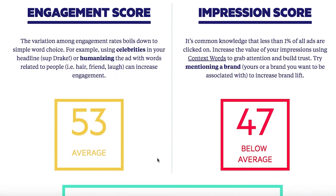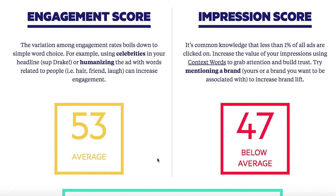We can also see some suggestions for each of these scores to up our game. For instance, on the engagement score, they recommend using humanizing language or even celebrities in your headline — if you can use Drake in your headline and have it make sense, please do that and email it to us. On the impression side, they talk about context words as well as mentioning a brand such as yours or a brand you want to be associated with, to increase brand lift.